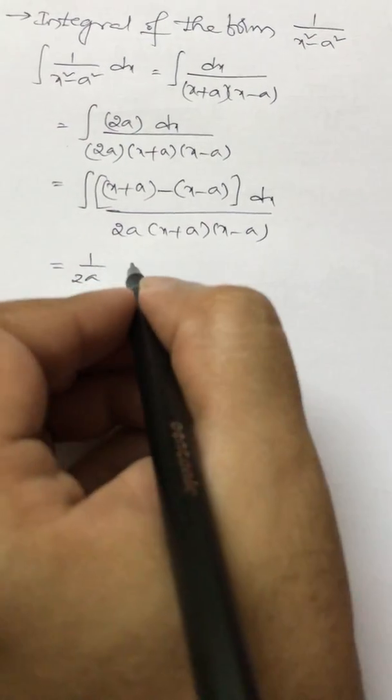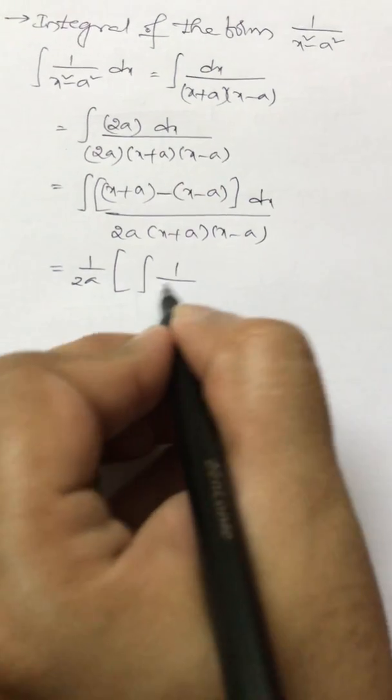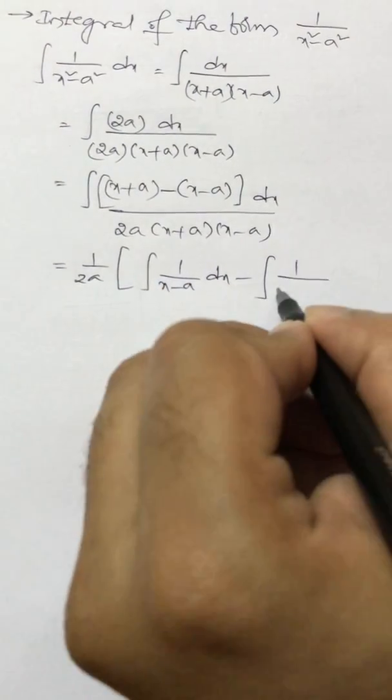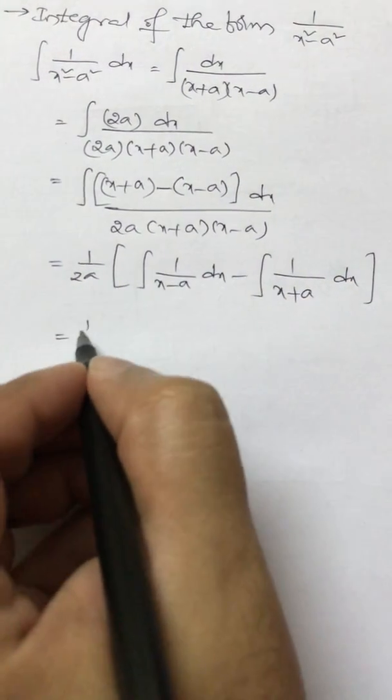So take 1 by 2a out, it will be integral 1 by x minus a dx minus 1 by x plus a dx.